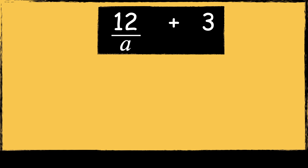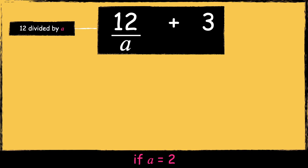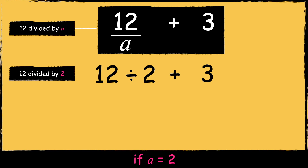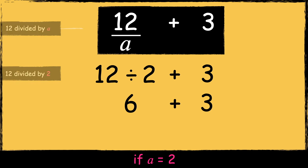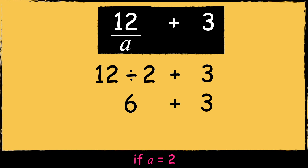Here's the next expression: 12 divided by a, add 3. We're going to find the value of this expression for if a equals 2. So we have 12 divided by a, and if a is 2, then we know it's 12 divided by 2, add 3. 12 divided by 2 is 6. Now we're left with the addition: 6 add 3 equals 9. So if a equals 2, then the value of this expression is 9.